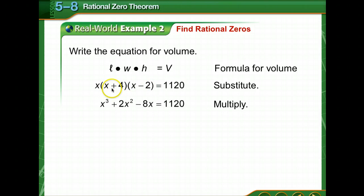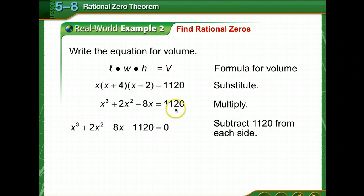Now we're simply going to multiply these out. I usually multiply the binomials and then multiply the monomial by whatever I get. Simplify. We're going to subtract 1,120 from each side.